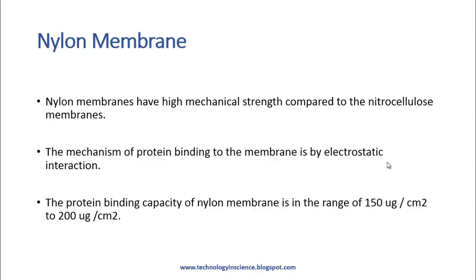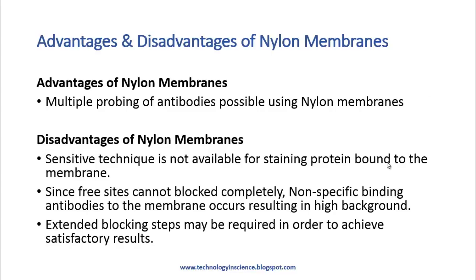Now let's look at nylon membranes. Nylon membranes have high mechanical strength compared to nitrocellulose membranes. The mechanism of protein binding to the membrane is by electrostatic interaction, and the protein binding capacity of nylon membranes is in the range of 150 to 200 microgram per centimeter square. The advantage is that multiple probing of antibodies is possible using nylon membranes, which was not possible with nitrocellulose membranes.